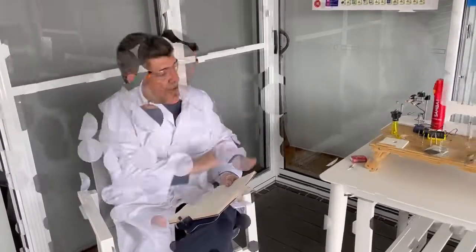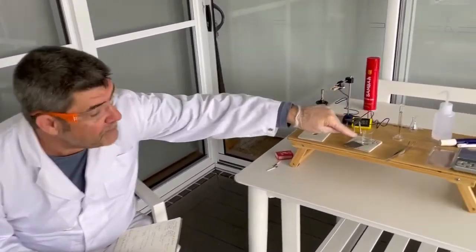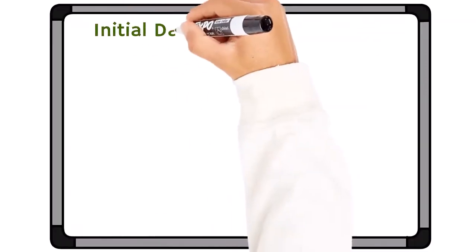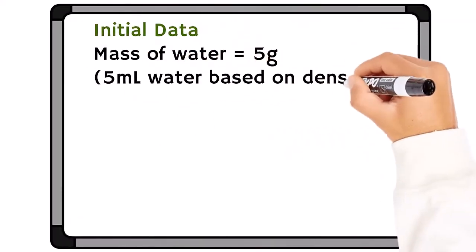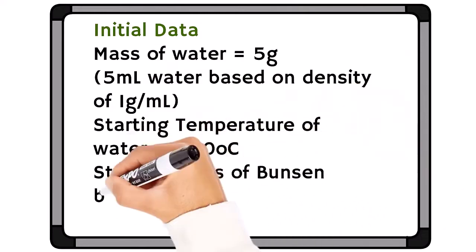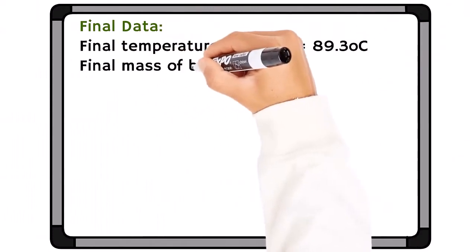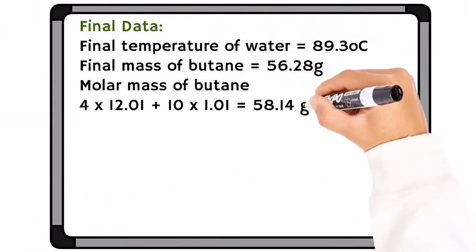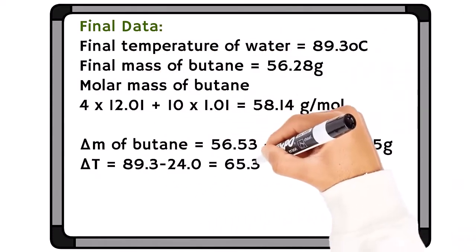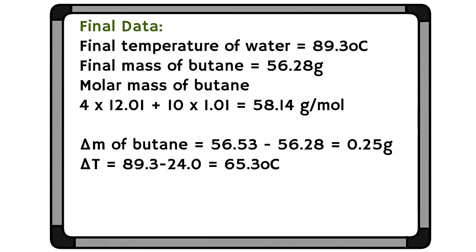Now I also need to work out the molar heat of combustion. To calculate the heat of combustion, I need to focus on the water. There was five mils of water, which weighs five grams. From my experiment, I started with 56.53 grams and I ended up with 56.28 grams, which means that I used 0.25 grams of butane in this experiment.